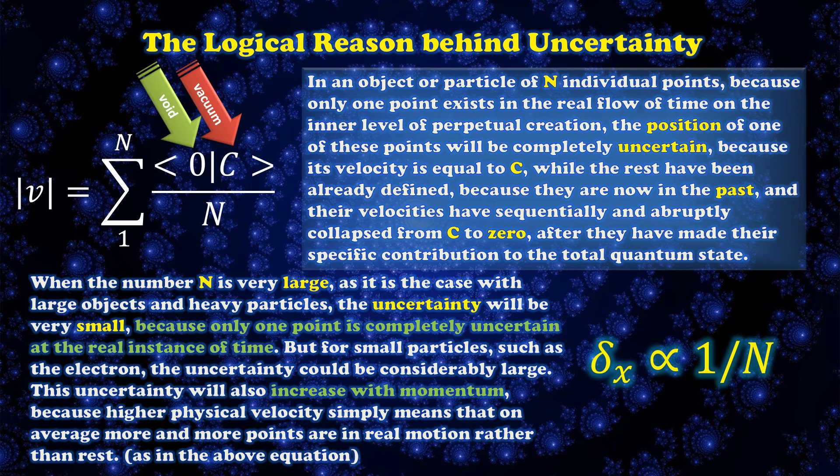When the number n is very large, as it is the case with large objects and heavy particles, the uncertainty will be very small because only one point is completely uncertain at the real instance of time. But for small particles such as the electron, the uncertainty could be considerably large. This uncertainty will also increase with momentum, because higher physical velocity simply means that on average more and more points are in real motion rather than rest.